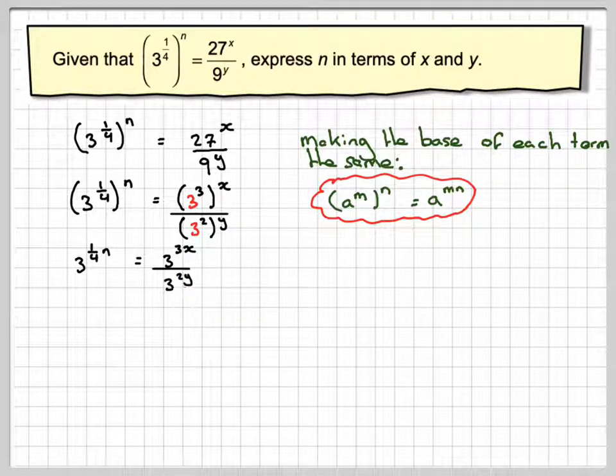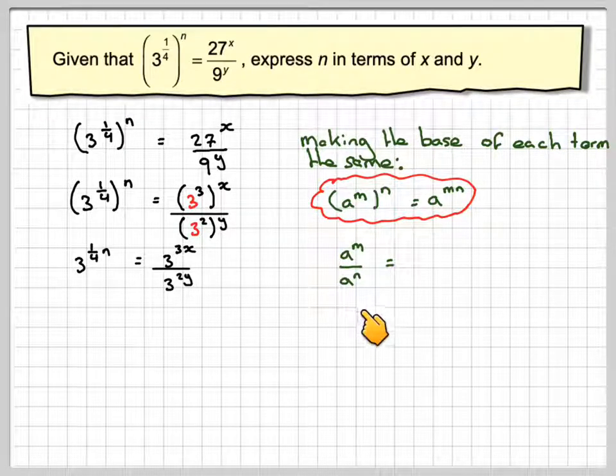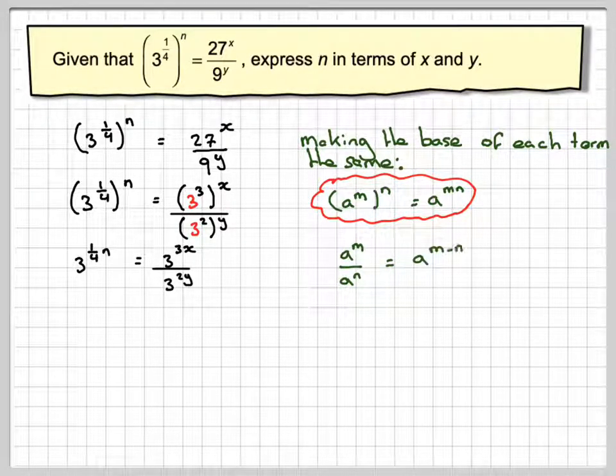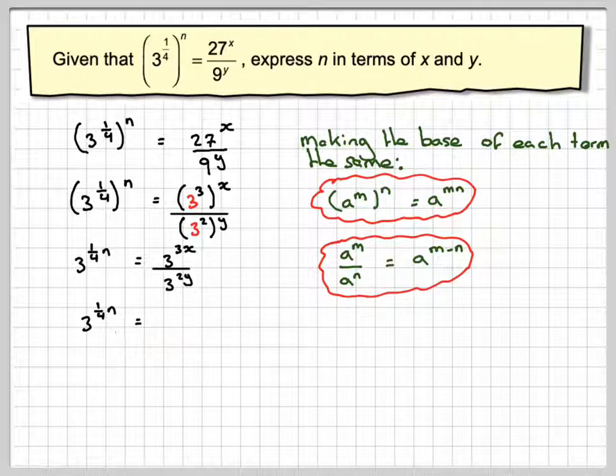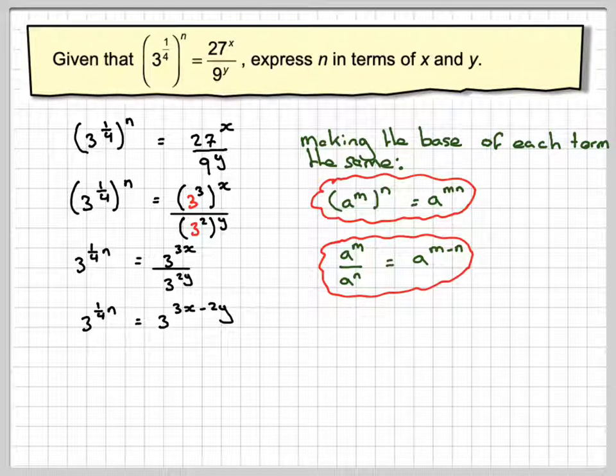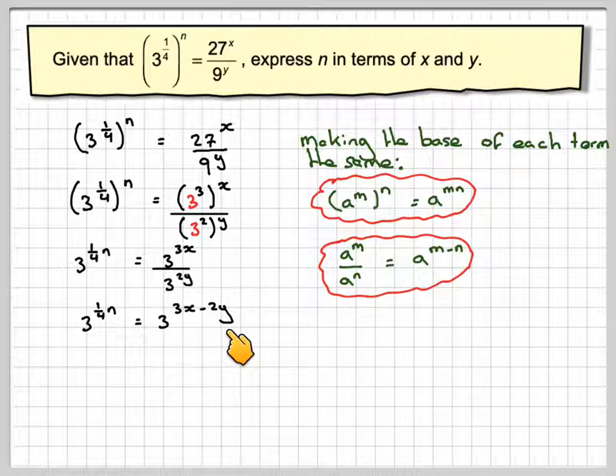Right, on this here, we're now going to use the idea that a to the m over a to the n is the same as a to the m minus n. So on this side, we're still on the same, but here we're going to have 3 to the 3x minus 2y.